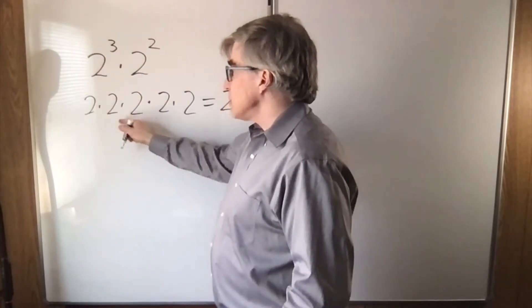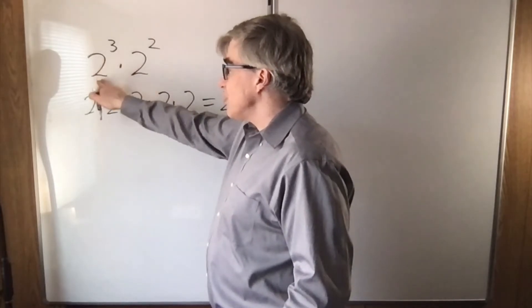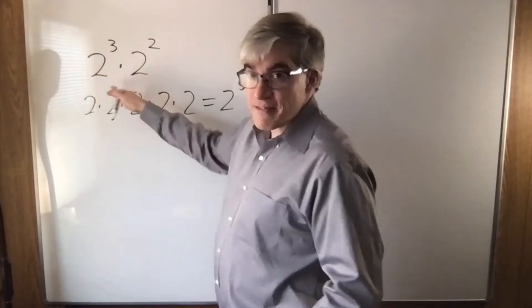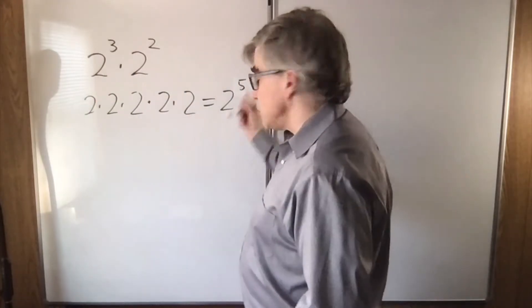You're literally counting how many twos. This says I have three twos and two twos that I'm all multiplying together, so I have five twos. So that's 2 to the fifth or 32.